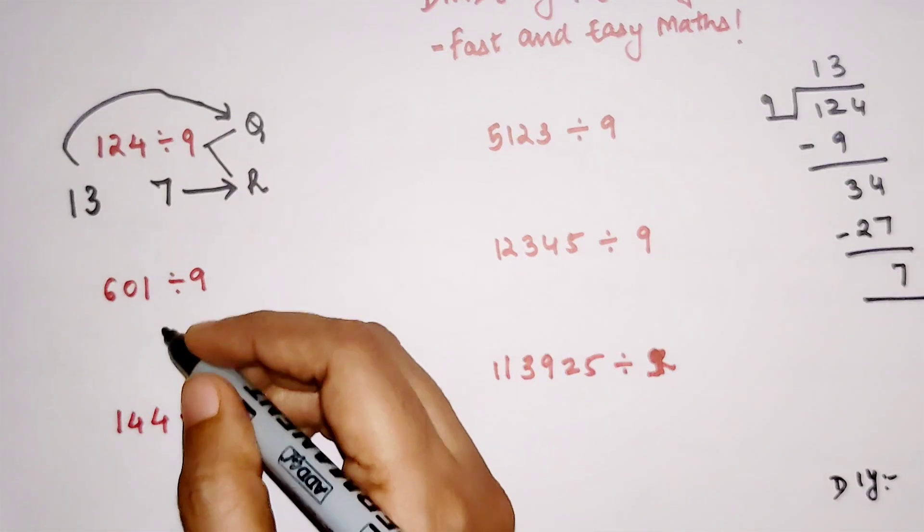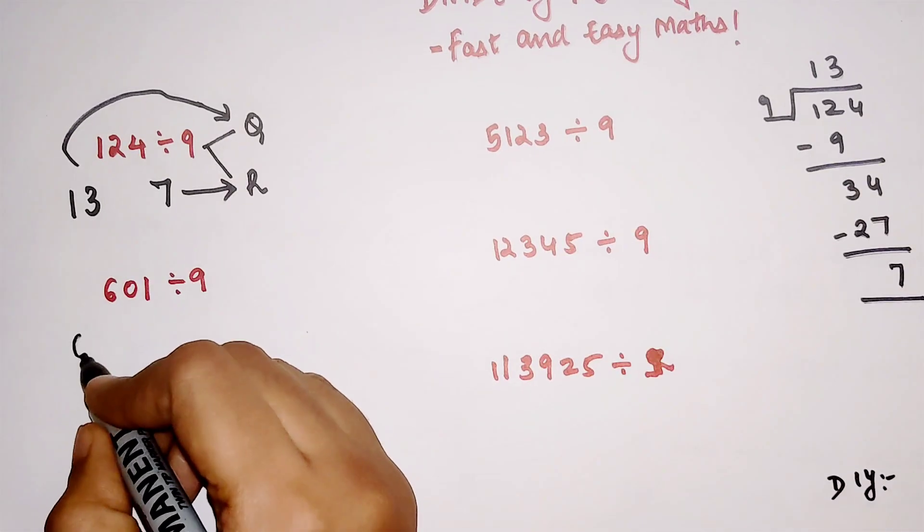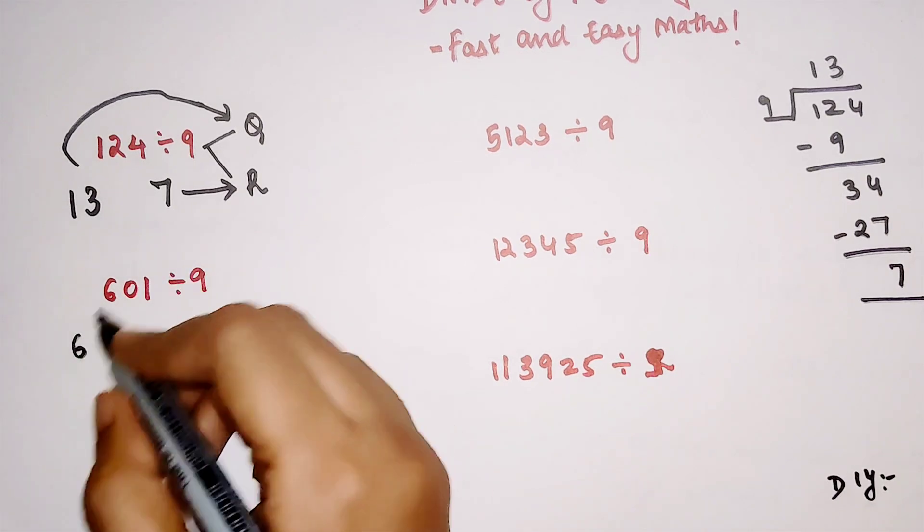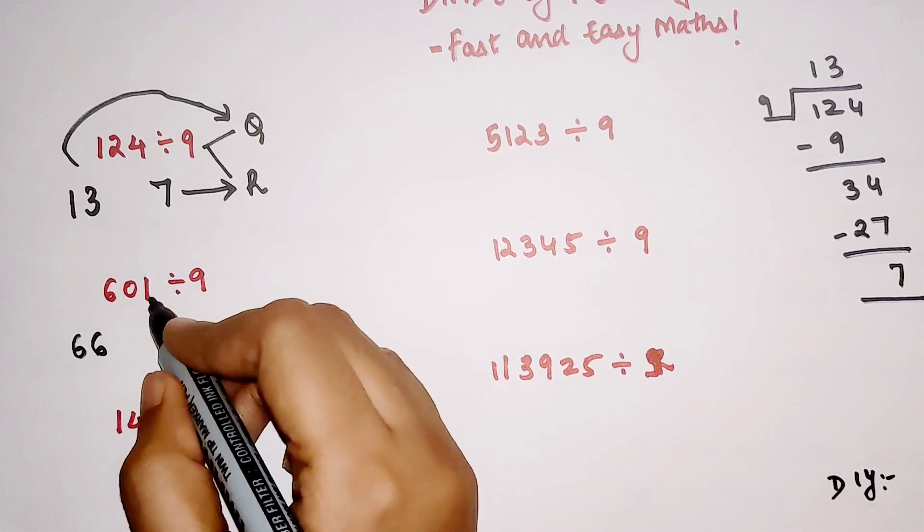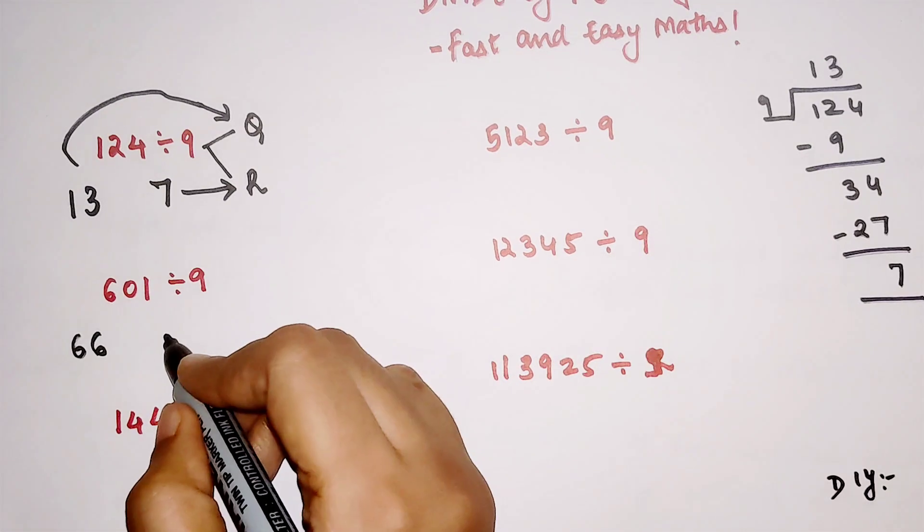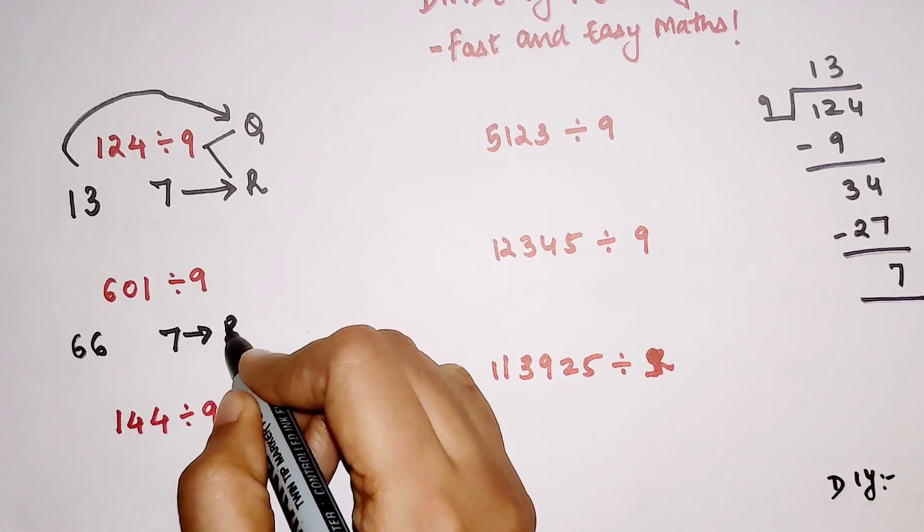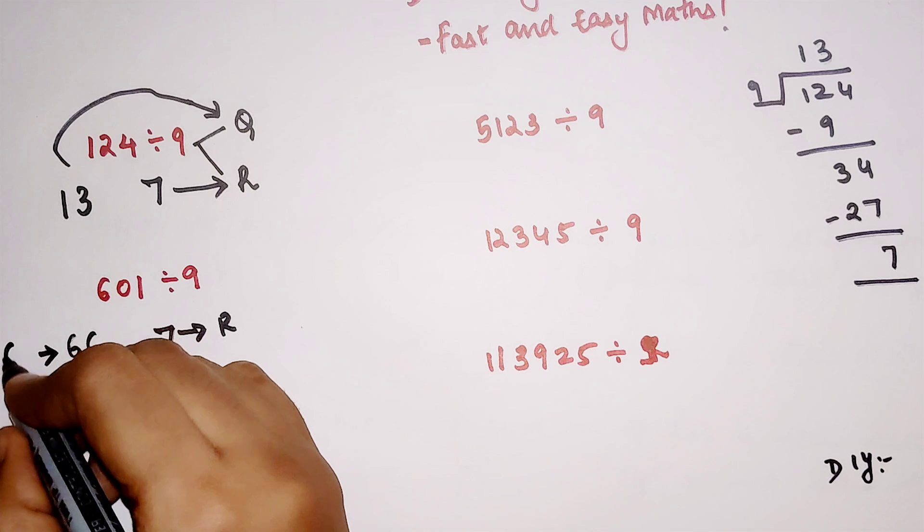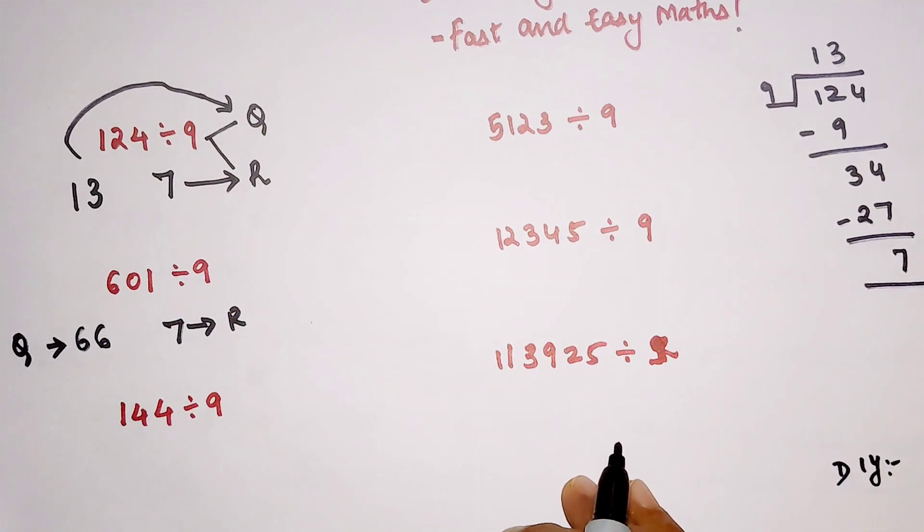So now for this one, we first write the first number as it is: 6, then 6 plus 0 is again 6, and 6 plus 1 is 7. So 7 will be your remainder and this is your quotient.